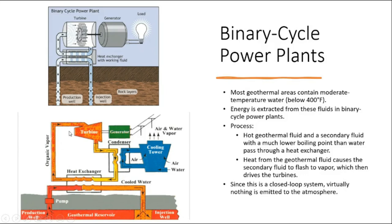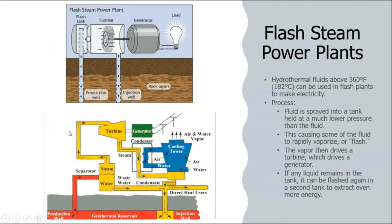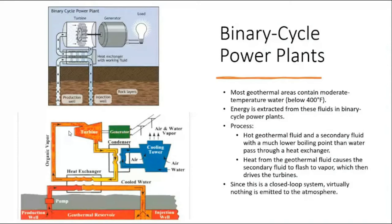Depending upon the temperatures available: if there is very high temperature, we go for dry steam power plants; at around 182 degrees Celsius, we go for flash steam power plants; and if there is lower temperature, we go for binary cycle power plants.